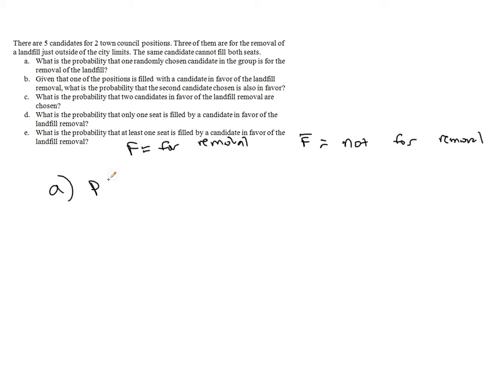In letter A, we want to know the probability that a randomly chosen candidate is for the removal of the landfill. There are five candidates, and three of them are for the removal, so there's a three-fifths chance.